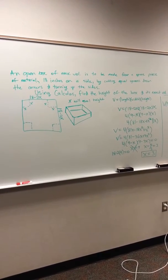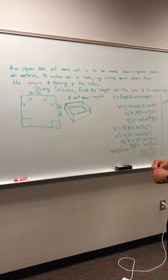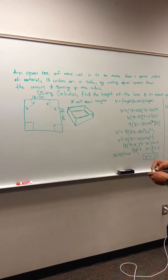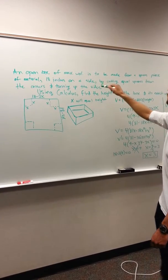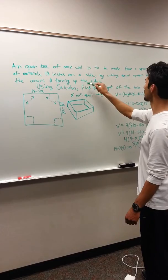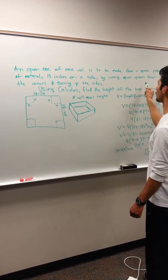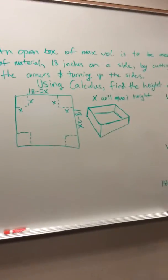We have this optimization problem for calculus. An open box of maximum volume is to be made from a square piece of material 18 inches on a side by cutting equal squares from the corners and turning up the sides. Using calculus, find the height of the box and its exact volume.